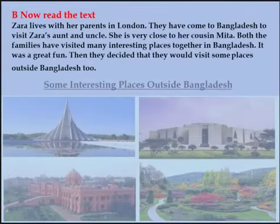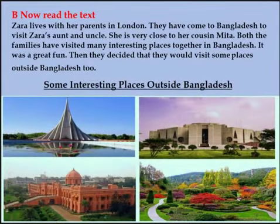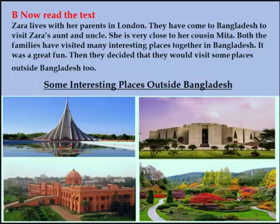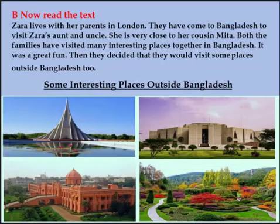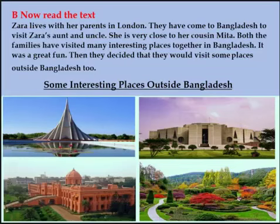Now read all the text first. Jara lives with her parents in London. Live means to have permanent residence somewhere — to reside or to inhabit. Jara resides with her father and mother in London. They have come to Bangladesh to receive Jara's aunt and uncle. Come means arrive at a specific place. They have arrived in Bangladesh to visit — visit means go to see and spend time with someone socially — Jara's aunt and uncle.